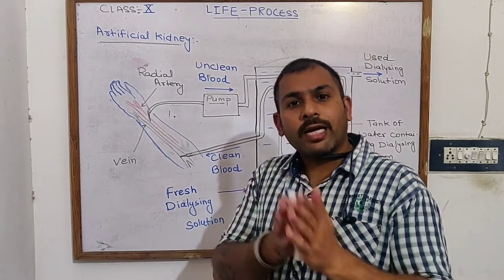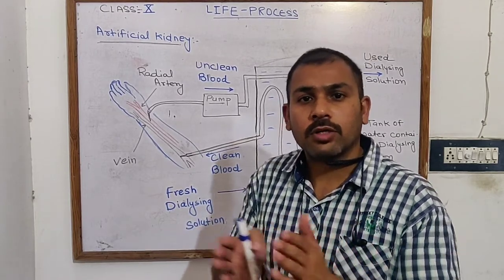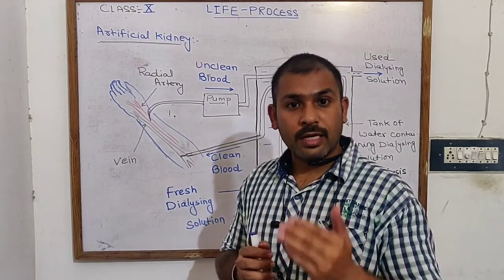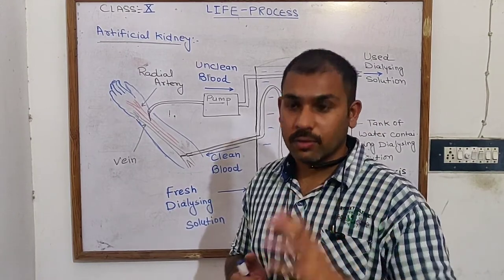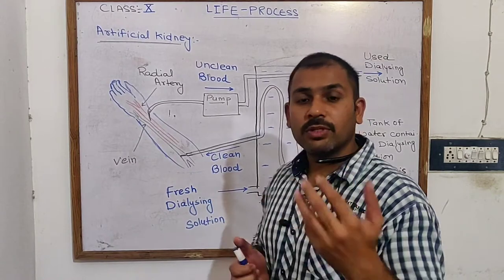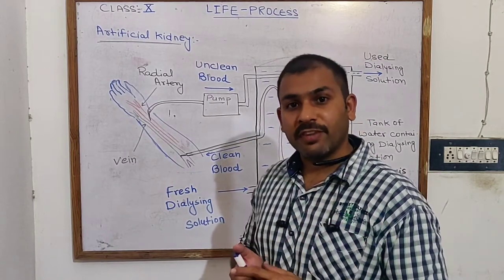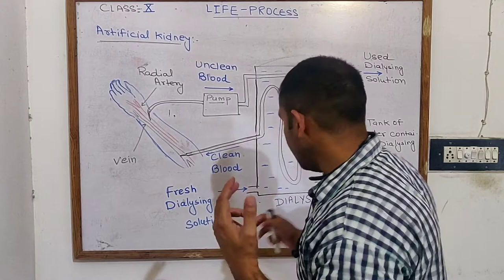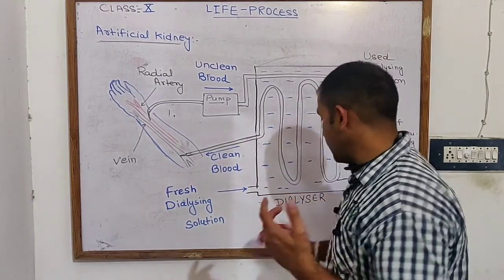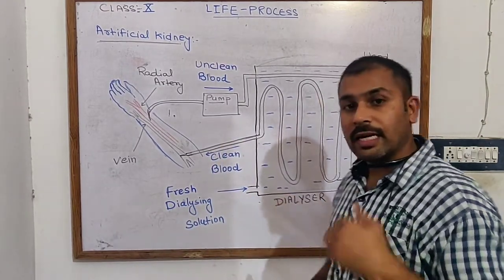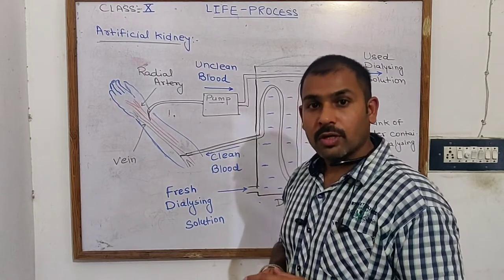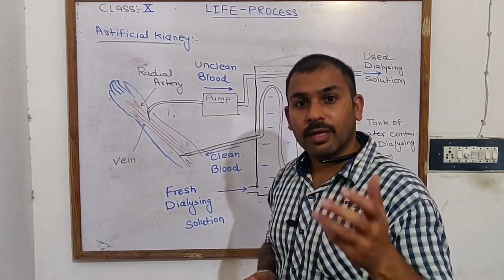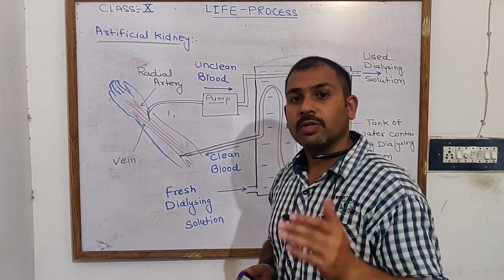Urine is the water-soluble product which is easily excreted through urine. If both kidneys fail, then we use the artificial kidney, which we call a dialyzer or a dialyzing machine, and we call it a hemodialyzer because it filters the blood.